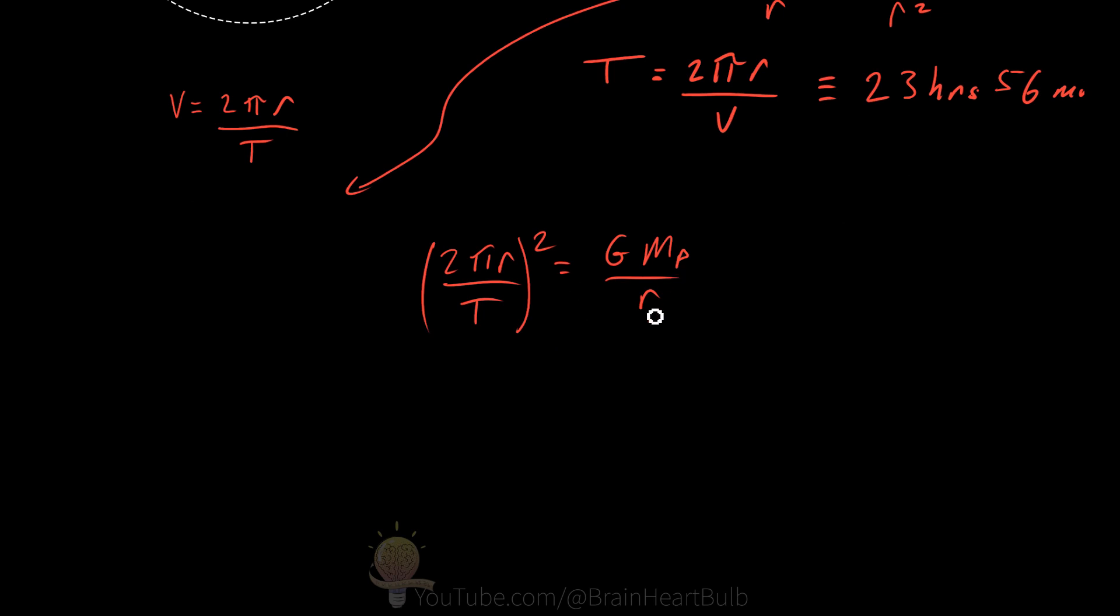So I'm going to square root each side gives us 2 pi r over T, which is equal to the square root of G M_p over r. And we can square root the numerator and denominator separately. So this equals square root of G M_p divided by the square root of r.